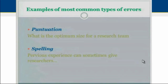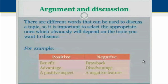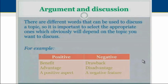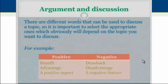When writing our essays, we may have different purposes in mind. One purpose can be to discuss or argue about a topic. There are different words that can be used to discuss a topic, and it is important to select the appropriate ones depending on the topic. For example, when discussing positive aspects we can use words like 'benefit' and 'advantage,' and phrases such as 'a positive aspect.' When referring to negative aspects, we can use 'drawback,' 'disadvantage,' and 'negative feature.'